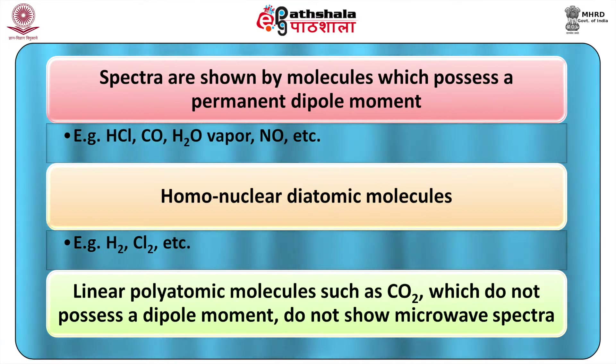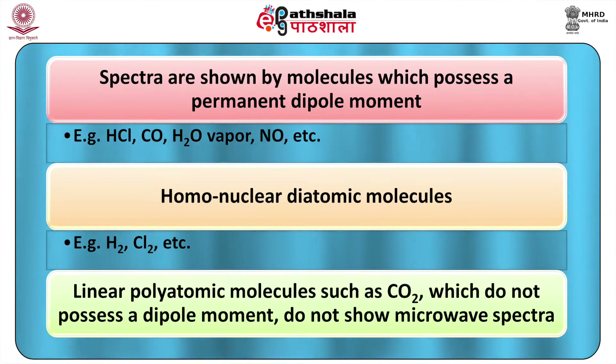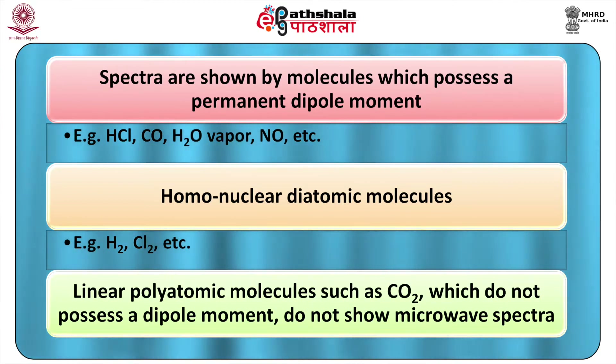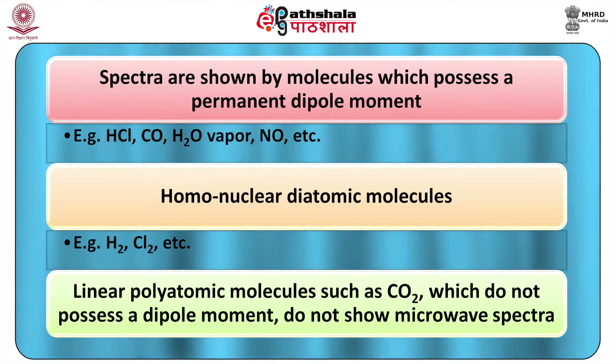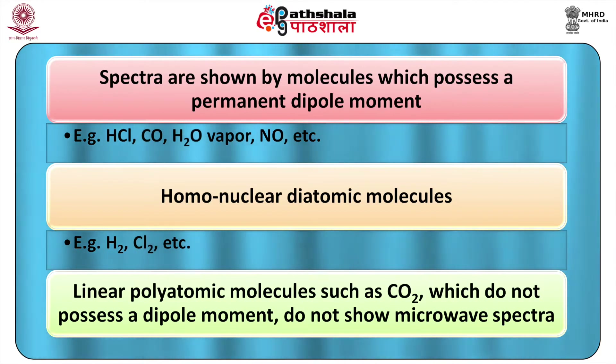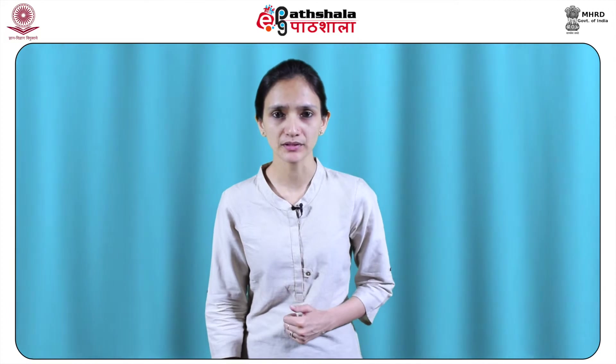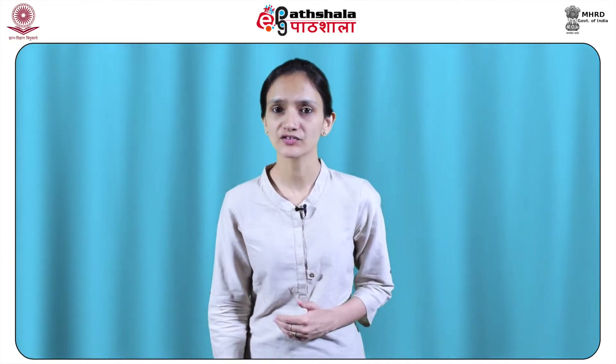Homonuclear diatomic molecules such as hydrogen and chlorine, and linear polyatomic molecules such as carbon dioxide which do not possess a dipole moment, do not show microwave spectra. The microwave spectroscopy explores that part of the electromagnetic spectrum extending from 100 micrometers to 1 centimeter. This region is designated as the microwave region, lying between the far infrared and conventional radio frequency regions. Spectroscopic applications of microwave consist almost exclusively of absorption work rather than emission.